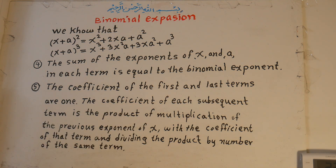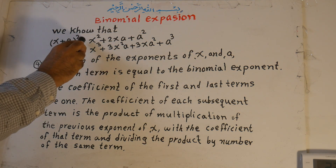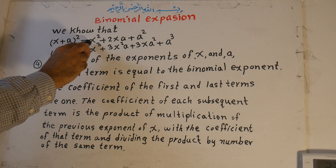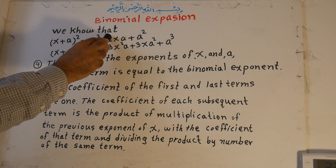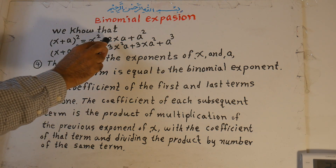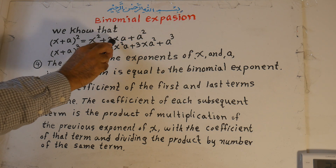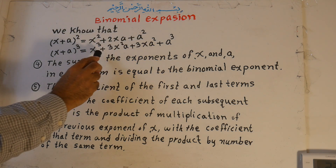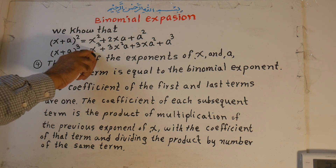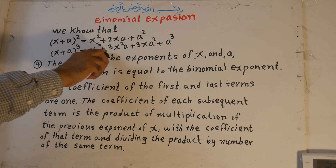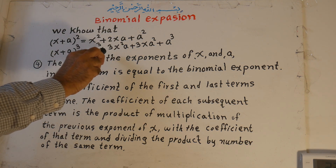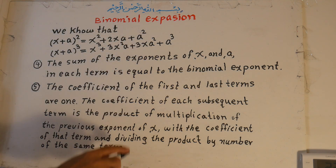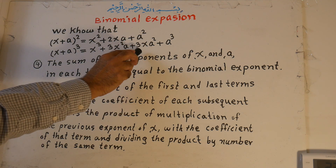The coefficient of each subsequent term is found by multiplying the previous exponent of x by the coefficient of that term, then dividing by the number of that term. So for the second term: exponent 2 times coefficient 1 divided by 1 equals 2. The third term: exponent 1 times coefficient 2 divided by 2 equals 1. For the cubic: 3 times 1 divided by 1 is 3; 2 times 3 divided by 2 is 3; 1 times 3 divided by 3 is 1.